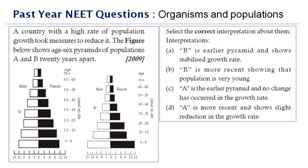Next question: a country with a high rate of population growth took measures to reduce it. The figure shows age-sex pyramids of the population A and B, 20 years apart. What can you analyze from this? There should be some decrease in the growth rate — that is the ultimate thing we need to see here.